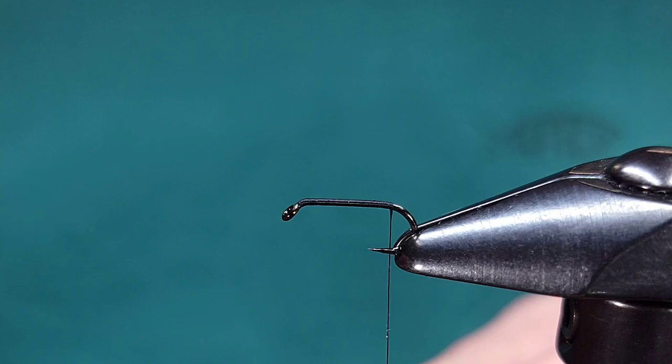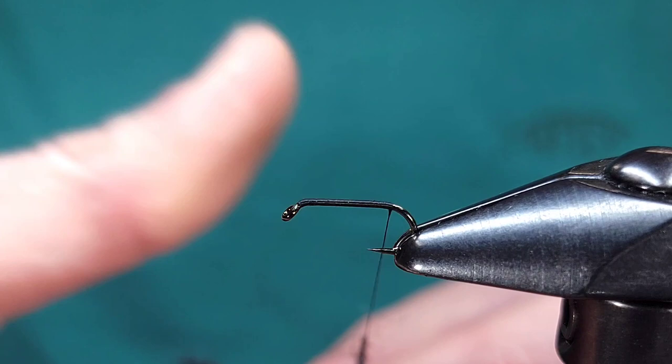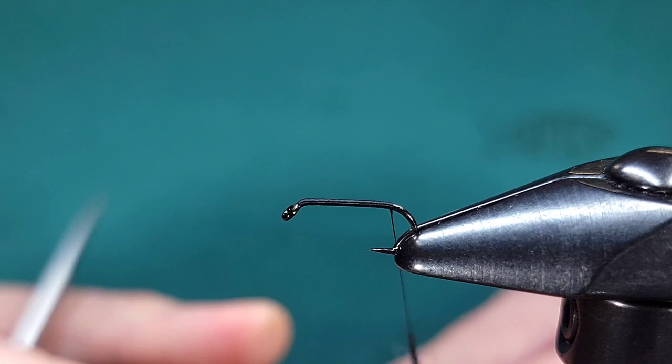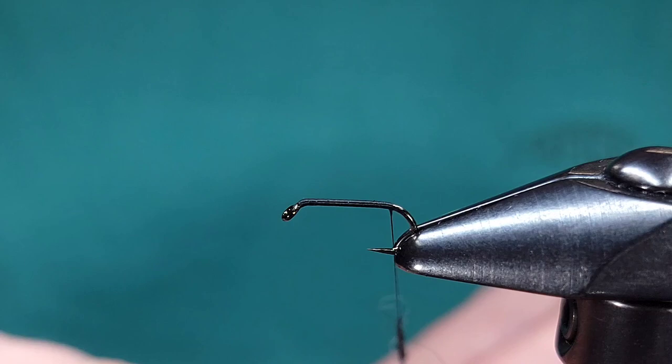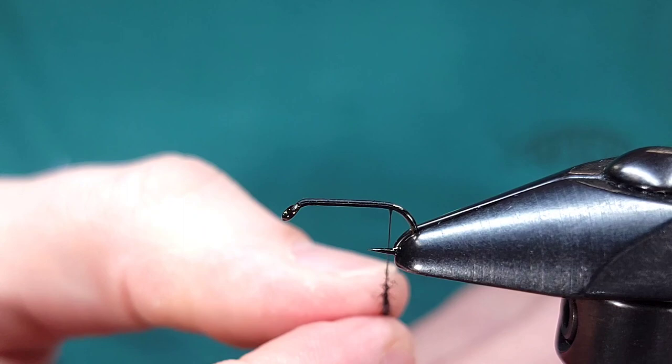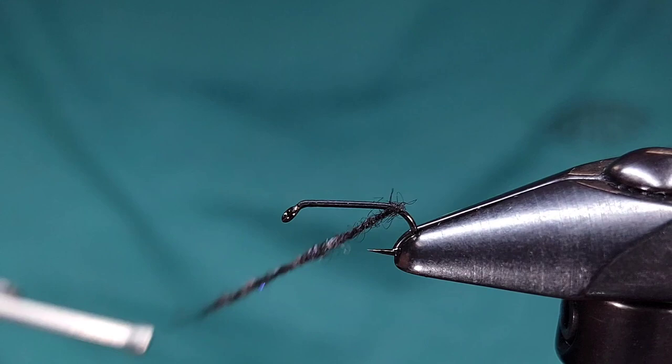So I'm just going to start building up a small thin dubbing noodle. You really don't want a lot of buildup on this fly because you do want it to be on the smaller side. For the back part of this fly you probably want about a two inch dubbing noodle that's just about as thin as you can make it. If you build up too much this fly can add up quick.